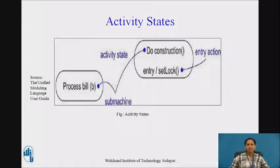Here is an example showing activity states. We have process bill b as an activity state and also do construction as another. Here we can see entry oblique set log where set log is a special state labeled as entry action.